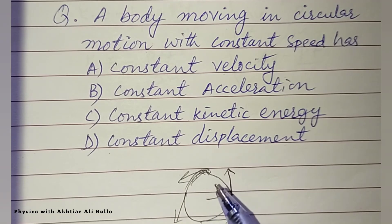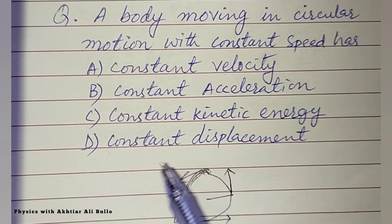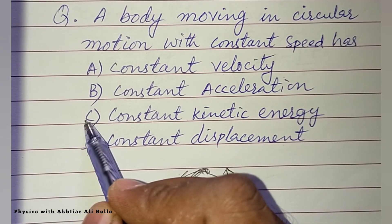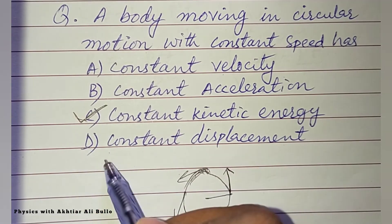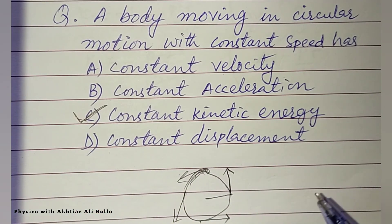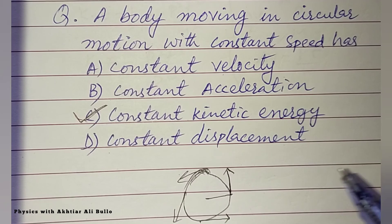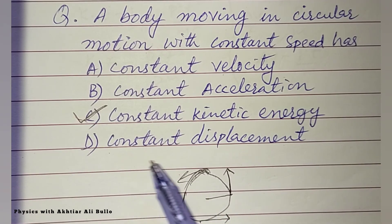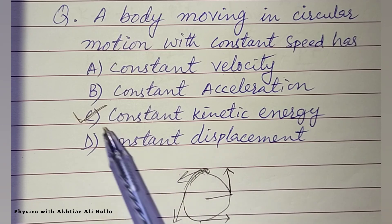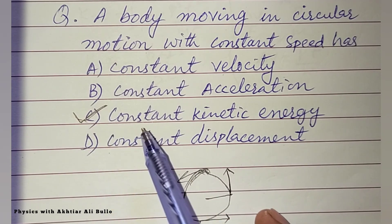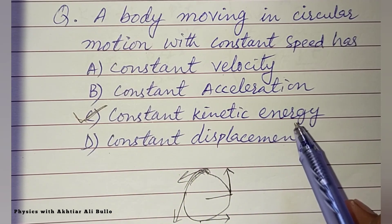Option (c), kinetic energy, is a scalar quantity, so it will remain constant. Therefore, the correct option is (c) constant kinetic energy. Option (d) is also incorrect because displacement is a vector quantity and linear displacement also changes. So the correct option is (c) constant kinetic energy.